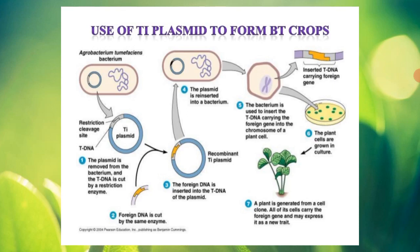Now our plant cells have the cry gene. We grow the plant cells in media, the cells multiply, and from each cell clone we grow a plant. All cells in that plant carry the cry gene. The cry gene produces the cry toxins — cry proteins which kill the insect — and this is the way they develop resistance against disease and insects. We produce Bt crops in this way, and these plants can be transferred to farmers so they can incorporate these plants into their agricultural fields.